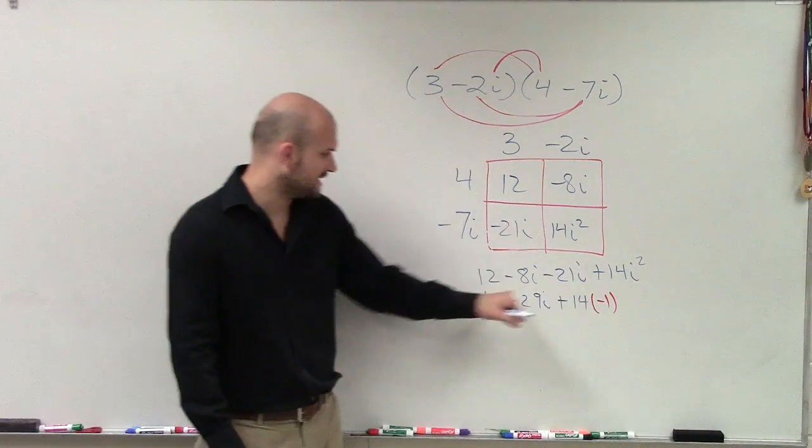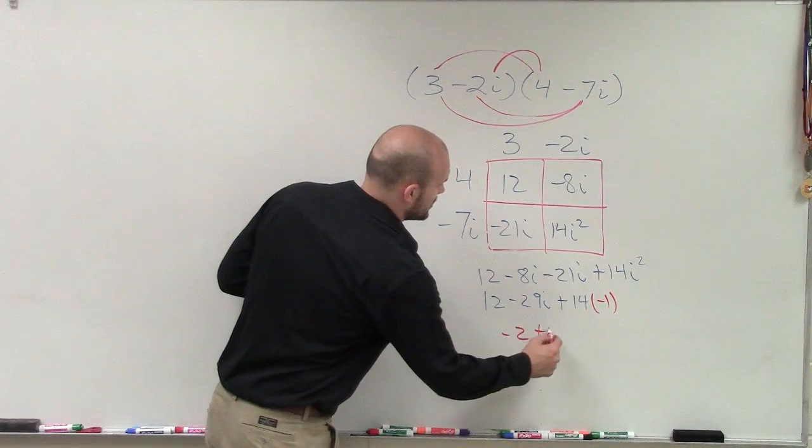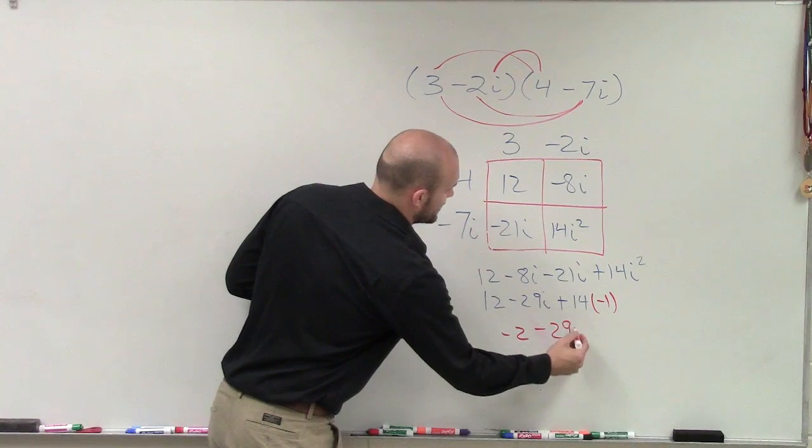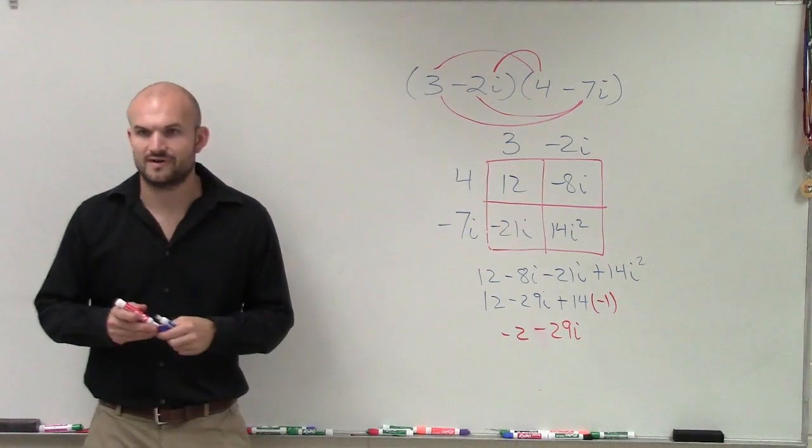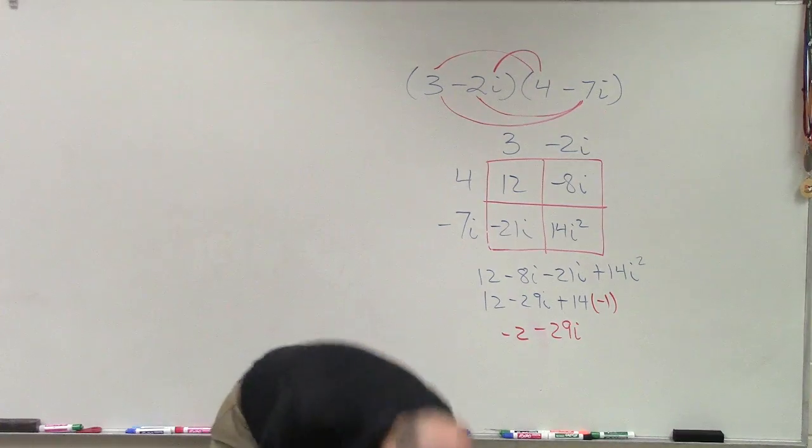So now I have negative 14 and I have a positive 12. So my final answer is negative 2 plus - I'm sorry, negative 2 minus 29i. And that's your final answer. Okay? Cool.